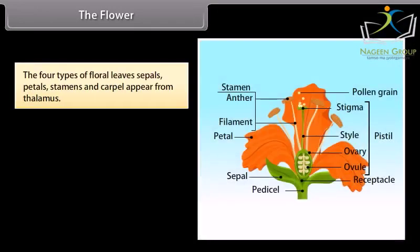The four types of floral leaves: sepals, petals, stamens and carpel appear from thalamus.